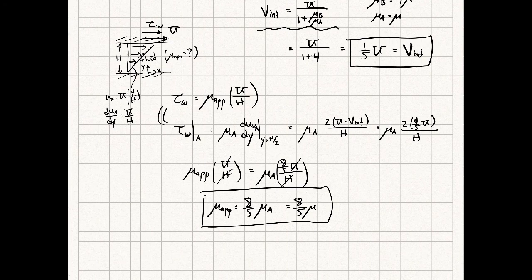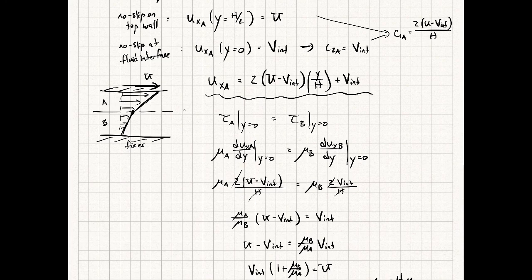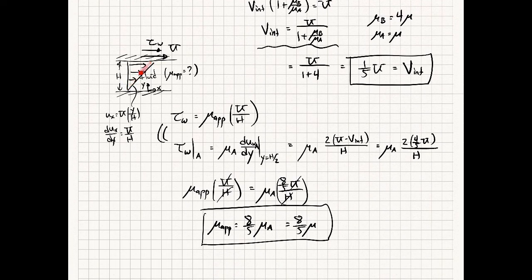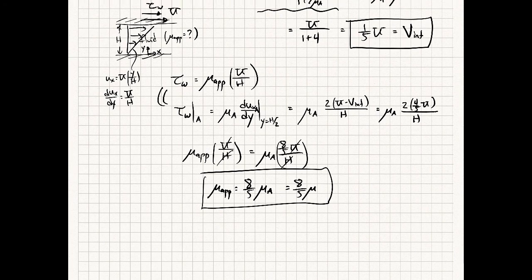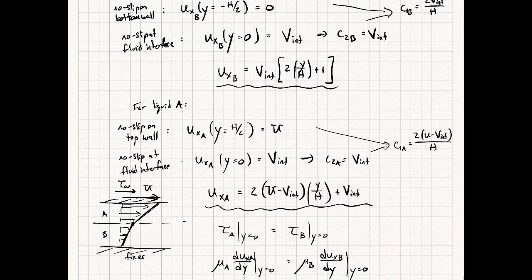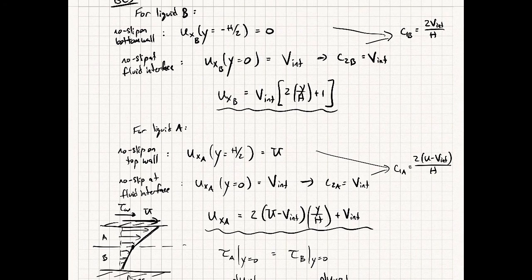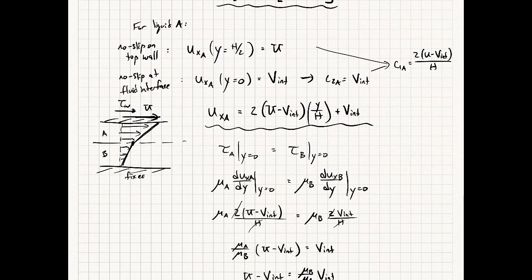So the apparent viscosity is 8/5 · μ. This means that to achieve the same wall shear stress and plate velocity U with a single fluid in this geometry, the fluid would need viscosity 8μ/5. The key insight is equating the wall shear stress from the real two-fluid system to what a single fluid would produce. The hardest parts of this problem are recognizing no-slip at the fluid interface and that stresses are continuous across the interface — those are by far the trickiest boundary conditions.